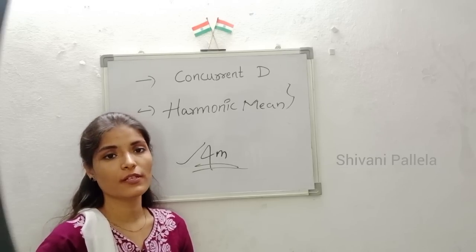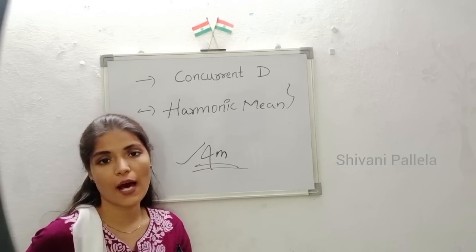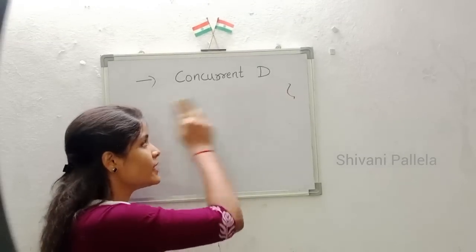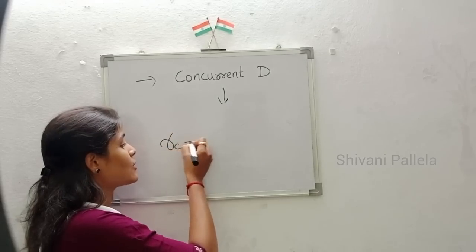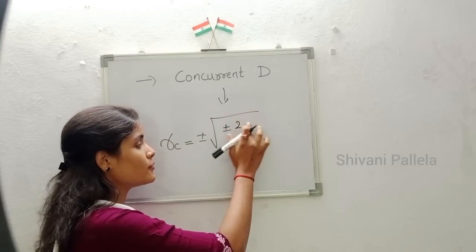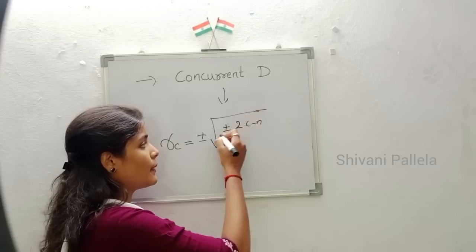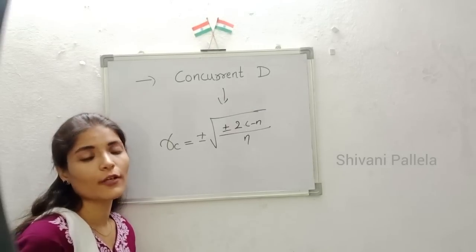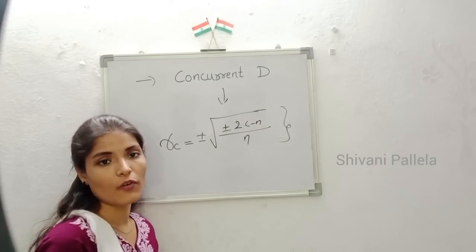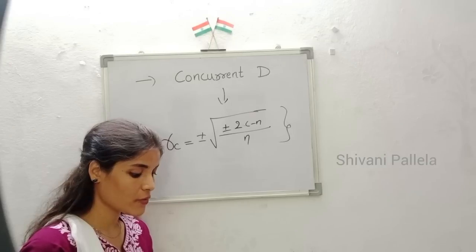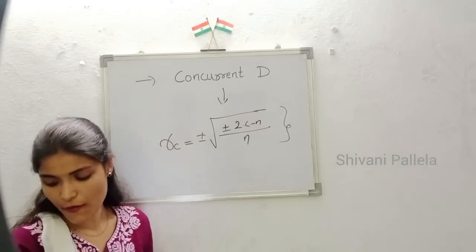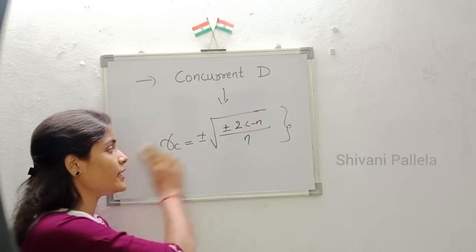Now we will discuss about concurrent deviation as well as harmonic mean. Firstly, we will discuss about concurrent deviation. In concurrent deviation, the formula is: rc = ±√(±(2c − n) / n). This is the formula for concurrent deviation. They will give the question, and we need to substitute the question values into the formula. Just note down this formula.